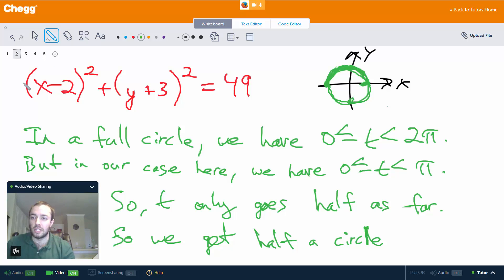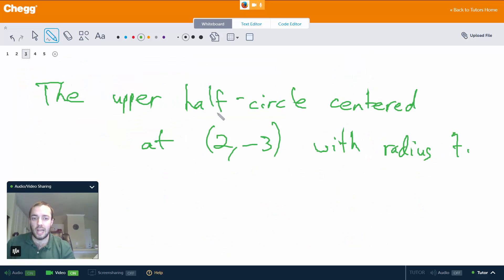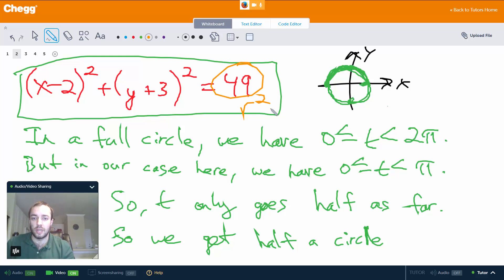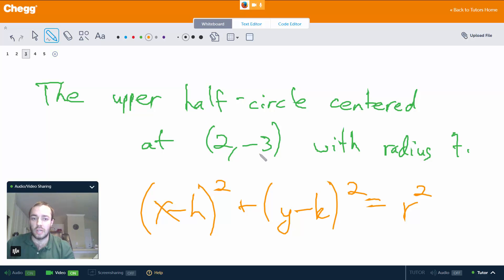So again, eliminating the parameter gives us (x - 2)² + (y + 3)² = 49. And then if we want to describe the graph we get the upper half circle centered at (2, -3) with radius 7. And if you're wondering where that comes from, that comes from the general formula (x - h)² + (y - k)² = r². So in our case here, r² is 49 so that means r, the radius, is 7. And here h is 2, and y + 3 is y - (-3), so -3 is k. So that's why the half circle is centered at (2, -3) with radius 7.